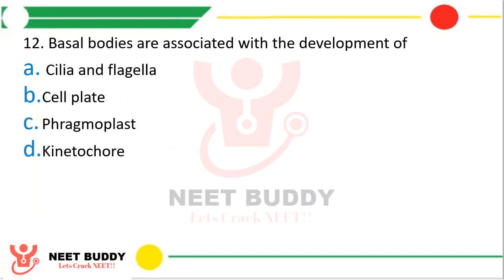Question number twelve. Basal bodies are associated with development of: option A cilia and flagella, option B cell plate, option C phragmoplast, or option D kinetochore. The correct answer is option A — cilia and flagella. They originate from a basal body.